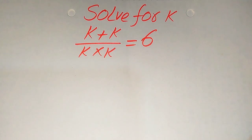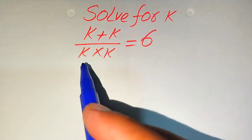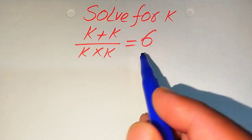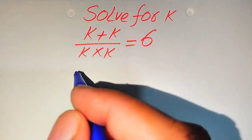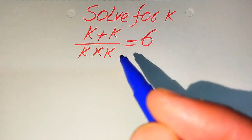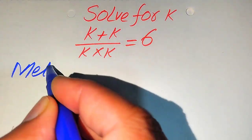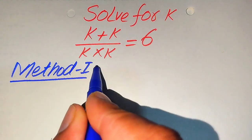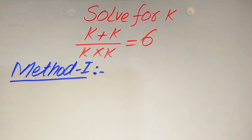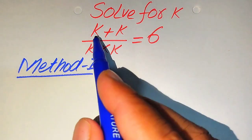Hello everyone. How to solve this problem: for the values of k, if we have k plus k divided by k, multiplied by k, is equal to 6. We solve this problem for all the values of k. First we find all the roots of this equation, and at the last we verify which of the roots are solutions and which are extraneous roots. We solve this problem using two methods.